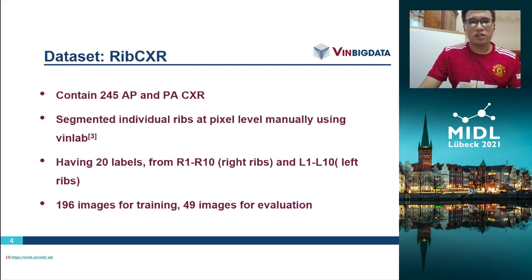Therefore, we introduce the dataset RIP chest X-ray. It contains 245 AP and PA chest X-ray images, and each image is segmented at the individual RIP level at pixel level, manually using a web-based labeling tool.